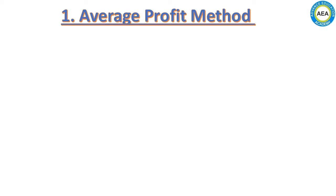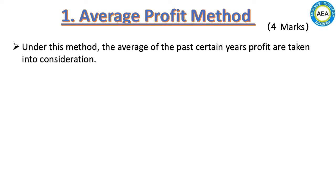The first method is the average profit method. There are some types of sums that will be asked in the exam from this method, which are four marks, or some theory questions like a short note. Under this method, the average of the past certain years of profit is taken into consideration.